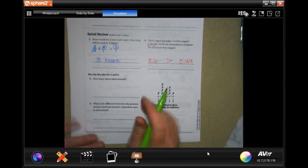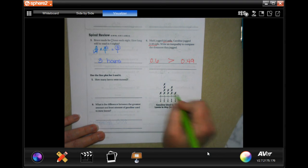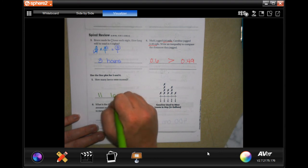How many lawns were mowed? Well, all we have to do is count the x's. One, two, three, four, five, six, seven, eight, nine, ten, eleven. Eleven lawns.